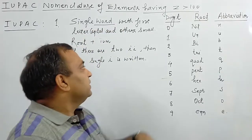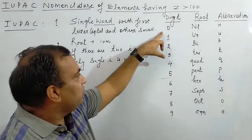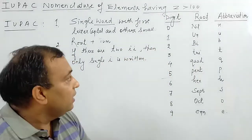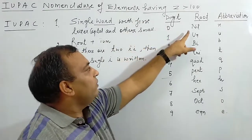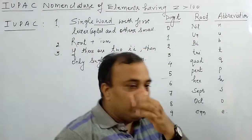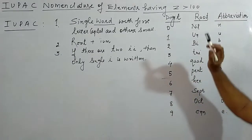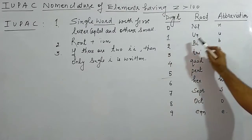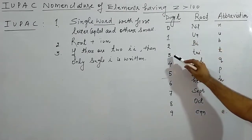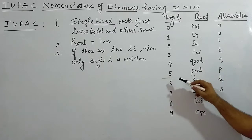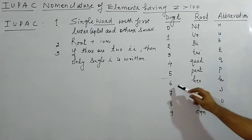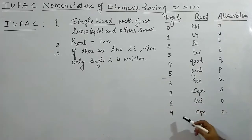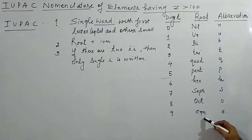For the digits present in atomic numbers — 0 through 9 — the roots are: 0 → nil, 1 → un, 2 → bi, 3 → tri, 4 → quad, 5 → pent, 6 → hex, 7 → sept, 8 → oct, 9 → enn. These roots are very important to learn.